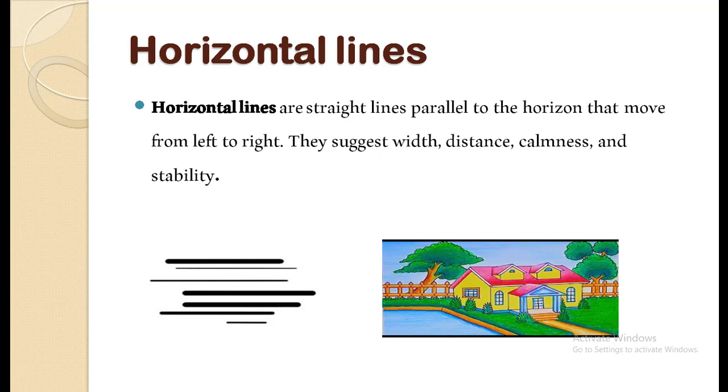Come to the next horizontal lines. Horizontal lines are straight lines parallel to the horizon that move from left to right. They suggest width, distance, calmness and stability. Students, aap deekh sakte hai. You can see the drawing as well.